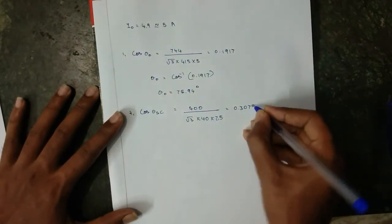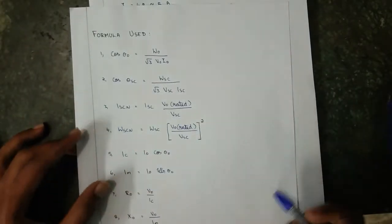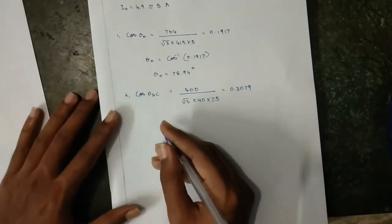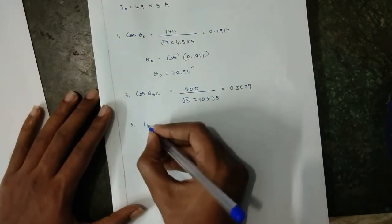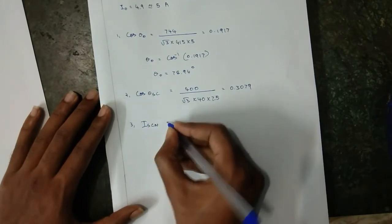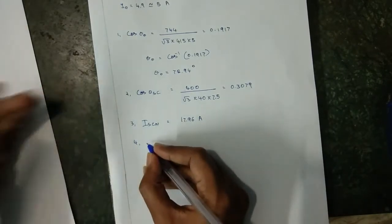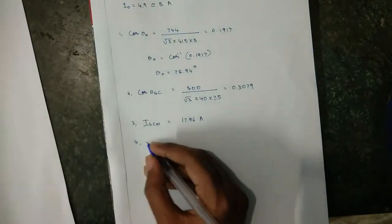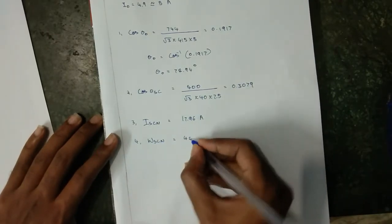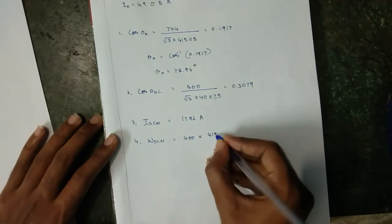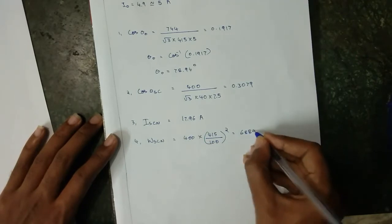I_sc equals 17.96 ampere. And then W_scn equals 400 into 4155 volts divided by 689 watt.